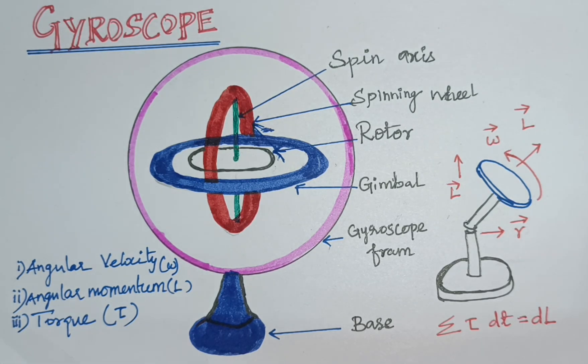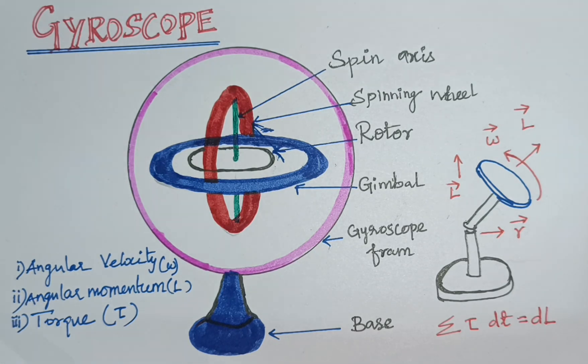This is a gyroscope. The gyroscope is a device. What are we going to do with the device? We will study the orientation of the angular velocity. We will talk about the principle, construction, working and applications.